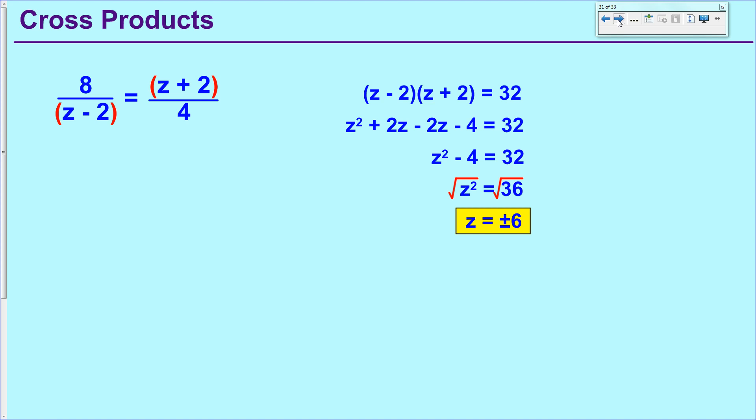That'll give you two answers and Z equals plus or minus 6. Always a good idea to check your answer on these things as well. That's about as tough as it gets for today.